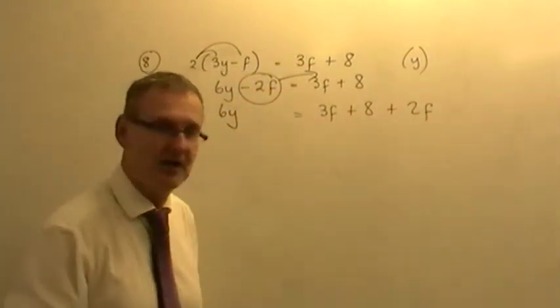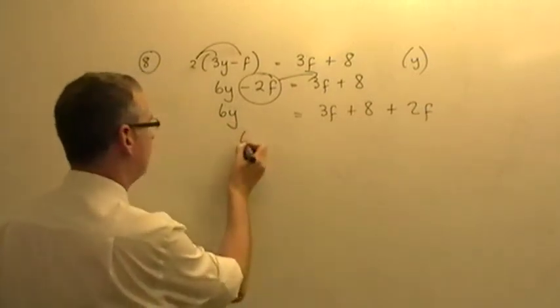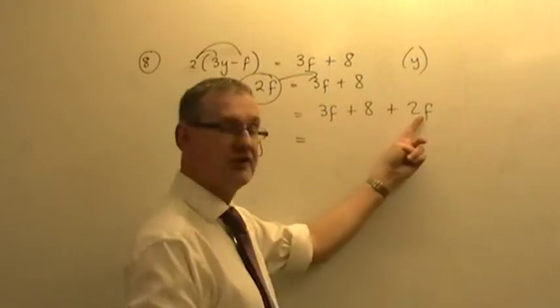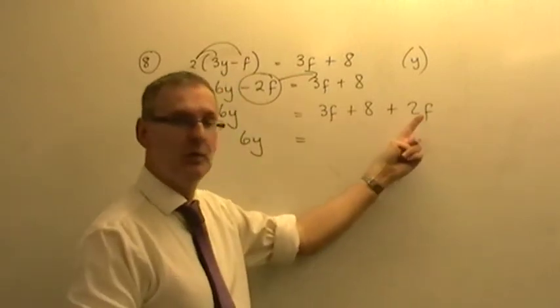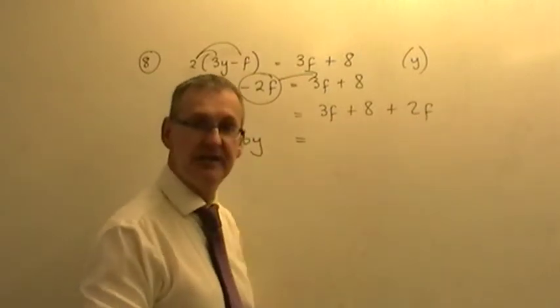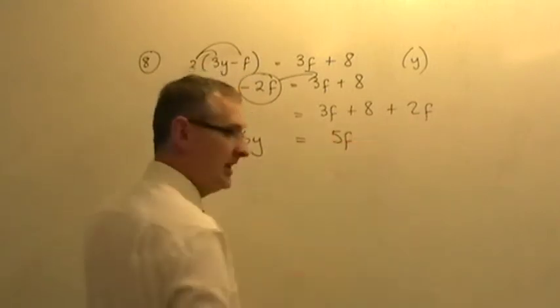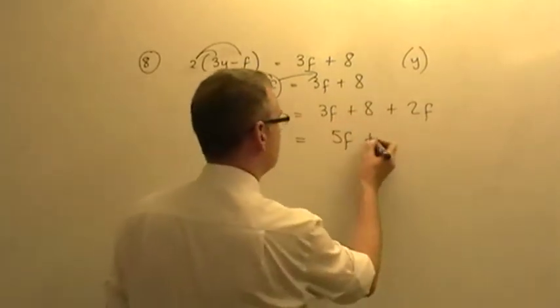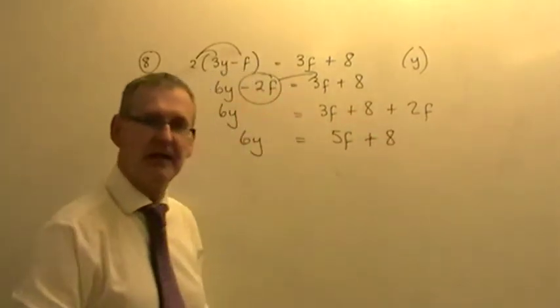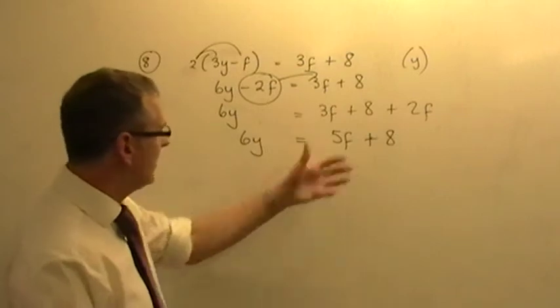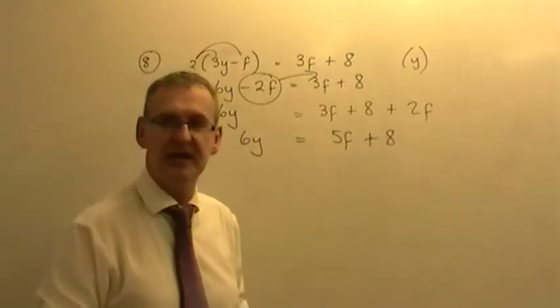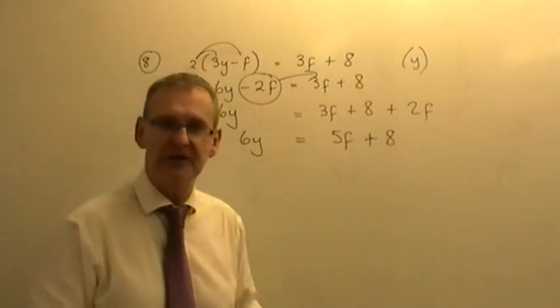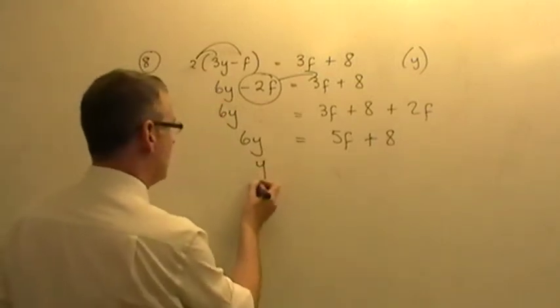Now we just tidy things up. Leave the 6Y alone for the moment, because you can see we've got 3F there, plus another 2F has joined it. Well, they can now go together to give 5F's. So you should put them together to simplify it to get 5F. The plus 8 just stays the same. So 6Y's are equal to 5F plus 8. But I don't want 6Y. I want Y on its own. So I have to get rid of that 6.